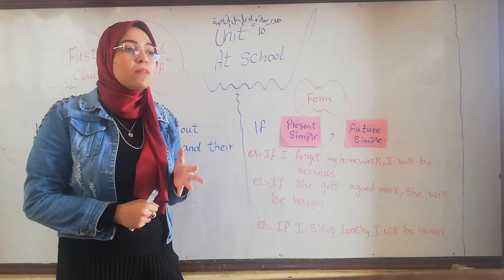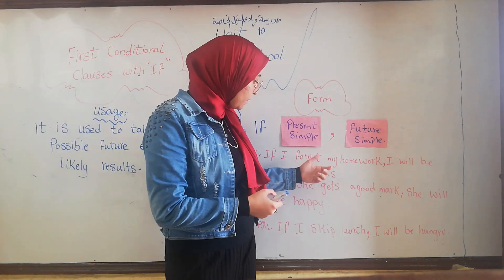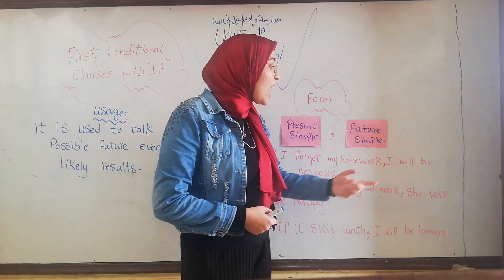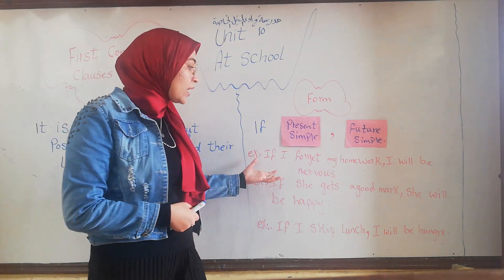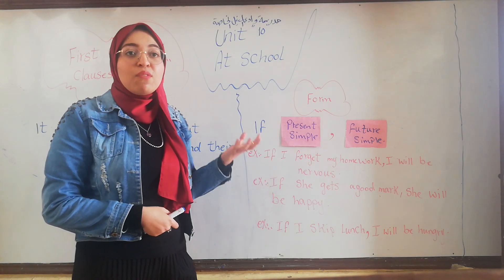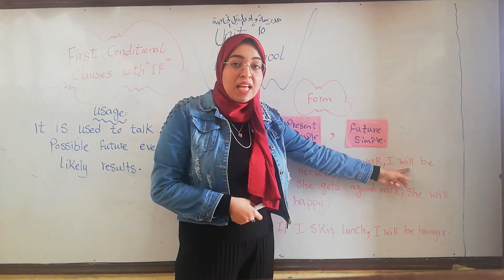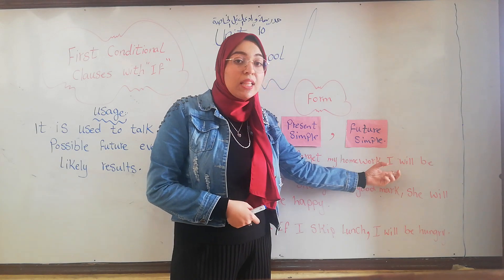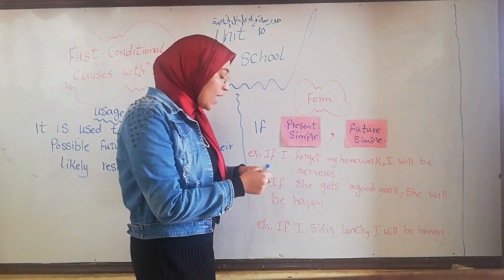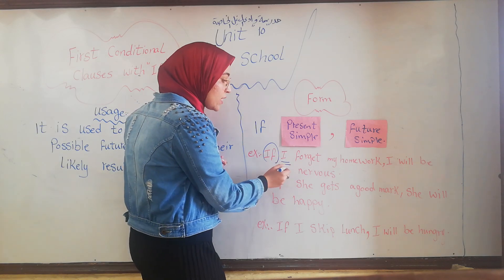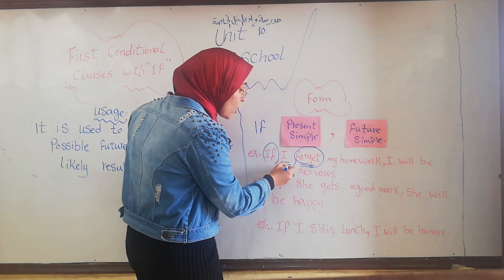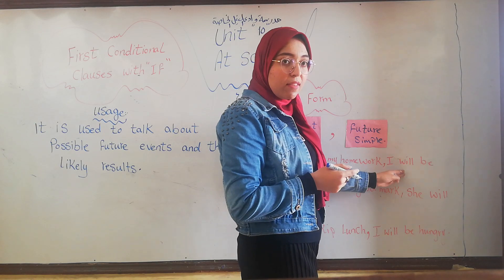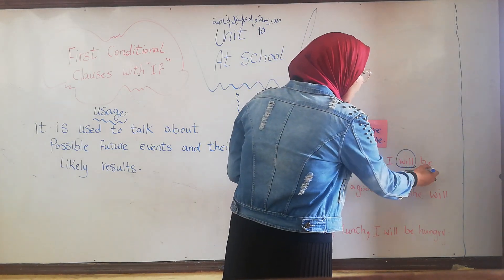Examples about this grammar. If I forget my homework, I will be nervous. Here, after if, we use the subject I, then the verb in its base form — forget — because the subject is I. In the second clause, we use will + verb in its base form — be.